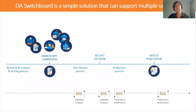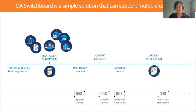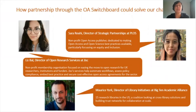The OA Switchboard is a simple solution, but what makes it seem complex is that it has so much potential and can support multiple use cases. It can be called upon or integrated at various points in the publication workflow — from grant through to publication. It's super flexible: a simple tool that can be integrated and ideally automated rather than done manually. There is a user interface for funders, institutions, and publishers for occasional situations or low volumes, but ideally this is integrated via API at any point in time.